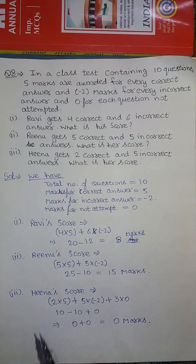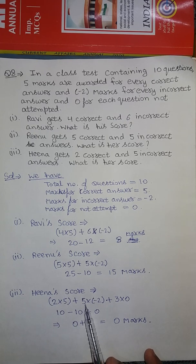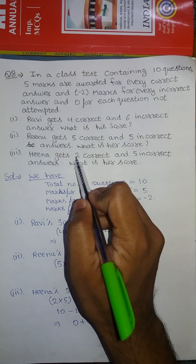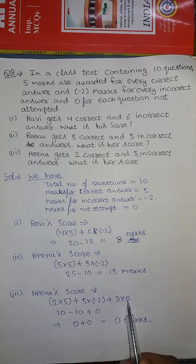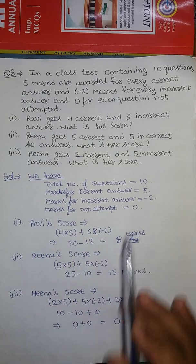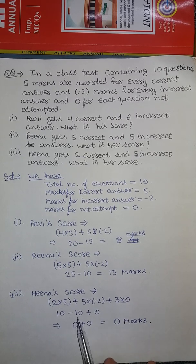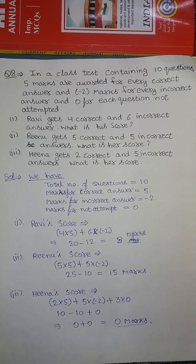Third, Heena's score: she gave 2 correct and 5 incorrect answers, so she did not attempt 3 questions. For 2 correct: 2 into 5. For 5 incorrect: 5 into minus 2. For 3 not attempted: 3 into 0. So 2 into 5 is 10, minus 5 into 2 is minus 10, plus 3 into 0 is 0. Therefore, 10 minus 10 plus 0 equals 0. Heena will get 0 marks. I hope you all understood — try these questions, and thank you!